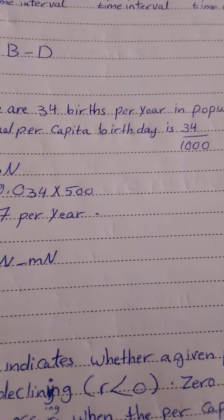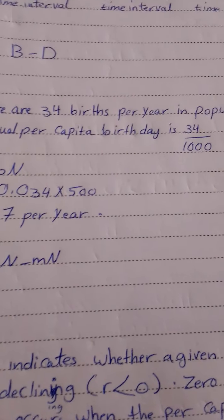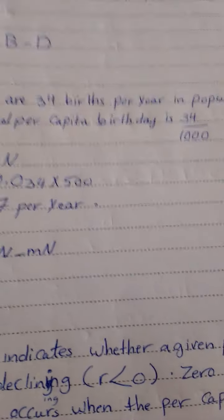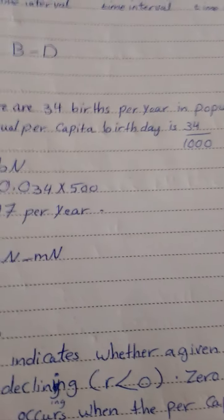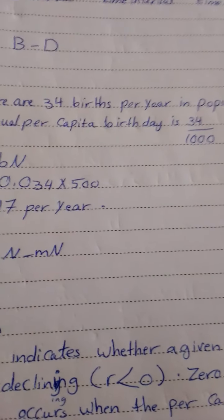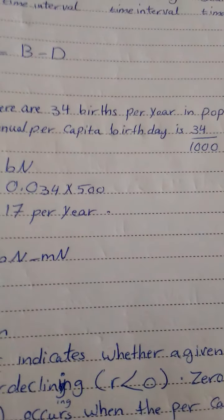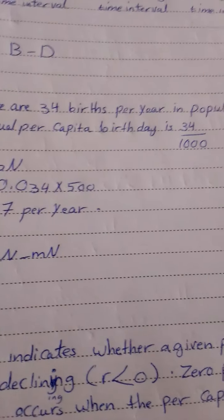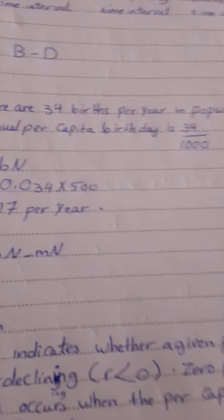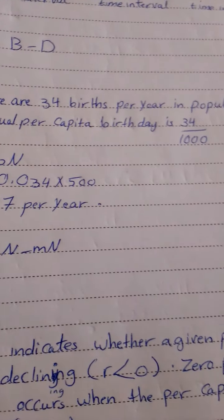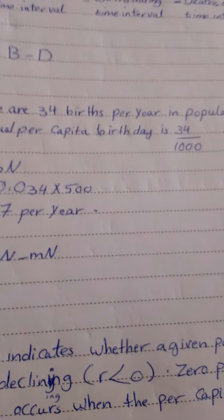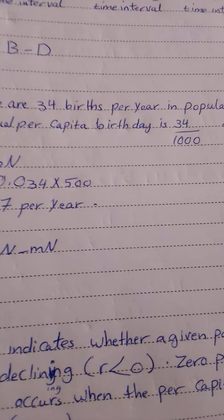To appreciate the potential for population increase, consider a single bacterium that can reproduce by fission every 20 minutes under ideal laboratory conditions. There would be two bacteria after 20 minutes, four after 40 minutes, eight after 60 minutes, and so on.